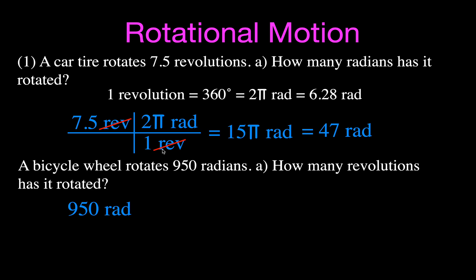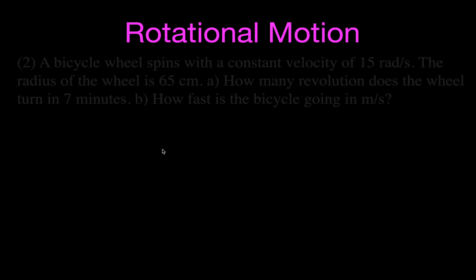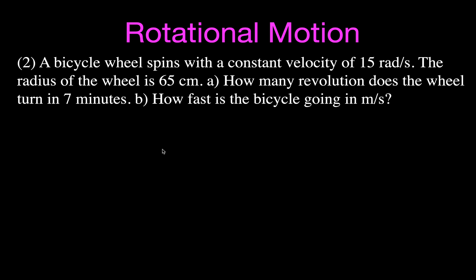Going the other direction: 950 radians converts to revolutions using the same conversion factor, but this time radians go on the bottom so they cancel and revolutions appear on top, giving 151 revolutions. It's important to be able to convert back and forth because equations require radians, while everyday language uses revolutions or degrees.